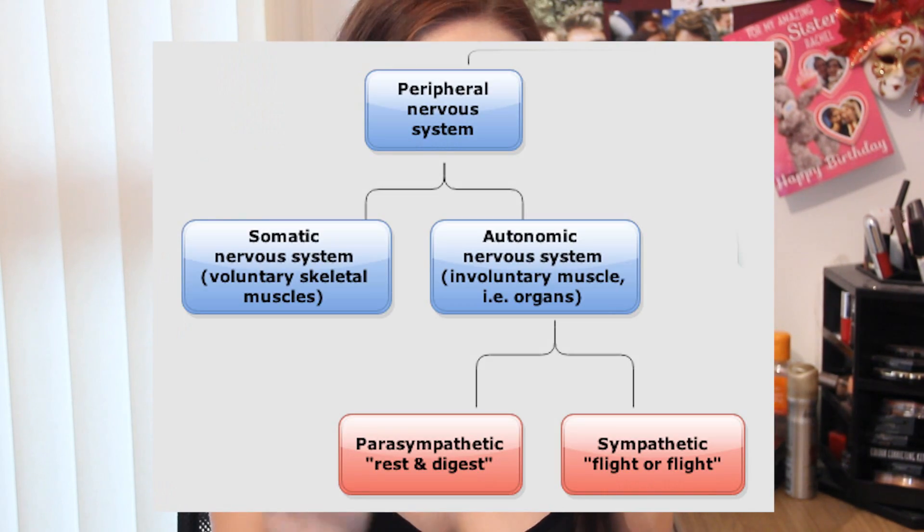The peripheral nervous system is again split up into two systems. First, the somatic nervous system. To put this really basically, it picks up sensory information and carries it to the central nervous system, and then carries the instructions back from the central nervous system to the various body parts. It's involved in controlling voluntary actions like moving your limbs and also reflex actions. You know when you sit cross-legged and the doctor hits your knee with a hammer and it kicks out — that's a reflex, and the somatic nervous system is in charge of that.